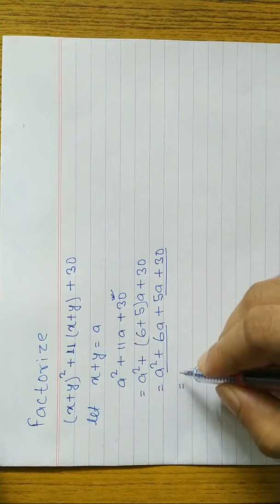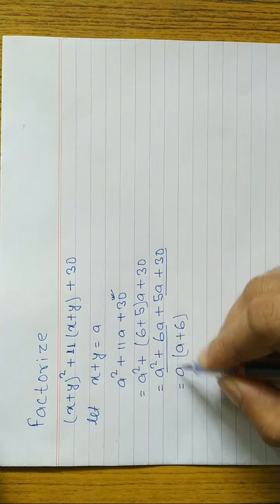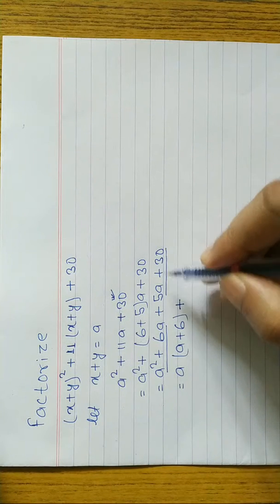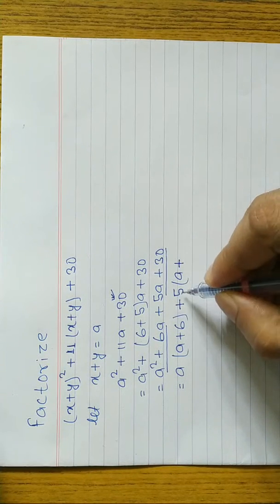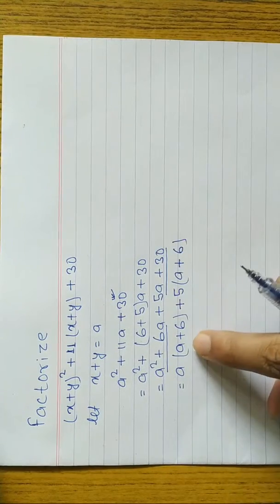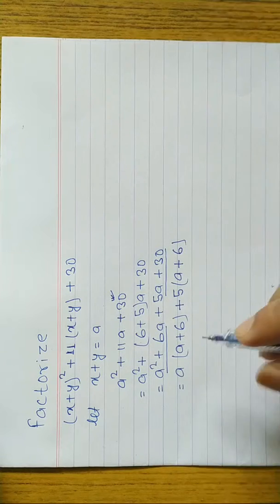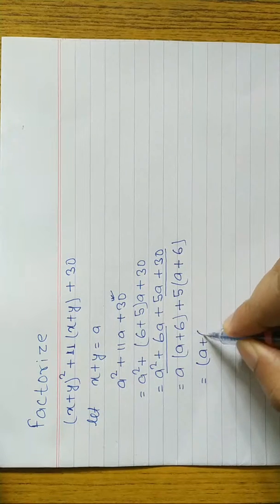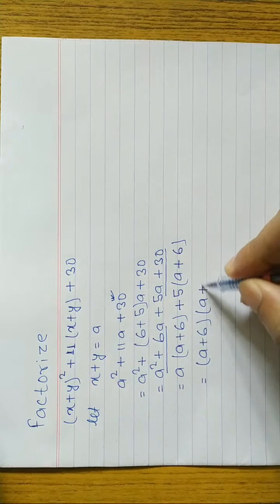Now from the first two terms we take common, and from the last two terms we take common. From the first two terms, a is common, remaining is (a + 6). From 5a + 30, 5 is common, remaining is (a + 6). Now a + 6 and a + 6 are always the same — if not same, your calculation is a mistake.